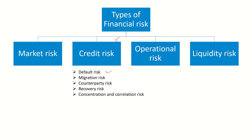Default risk is simply when someone has given a loan to a third party and that third party defaults in repaying it back. Migration risk means when you gave a loan to a person who was, say, triple-A rated, but because of certain events in the economy or with that person, his credit rating migrated from triple-A to, say, triple-B. This is a risk — when you gave the loan he was less risky, but now he is more risky than before.